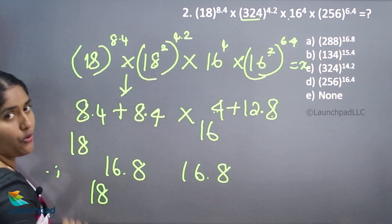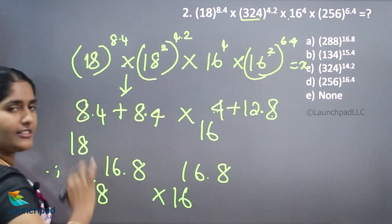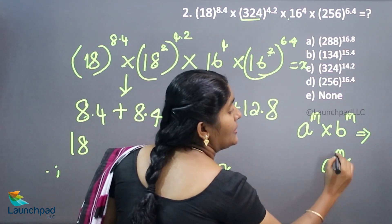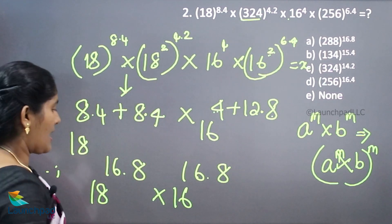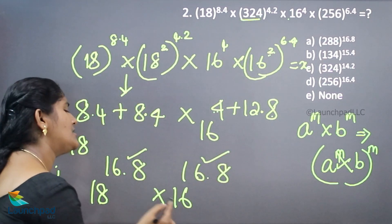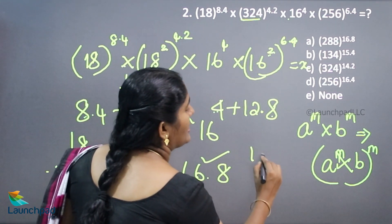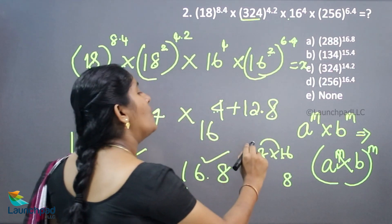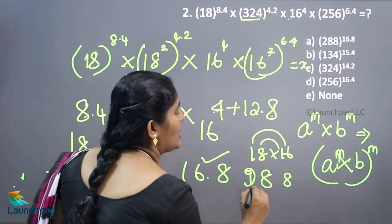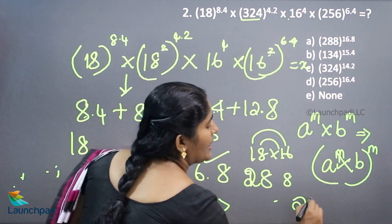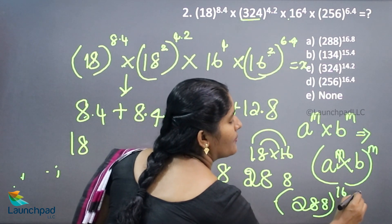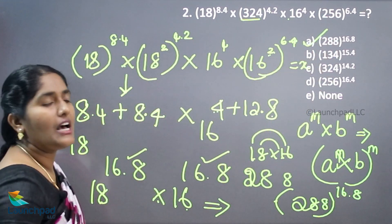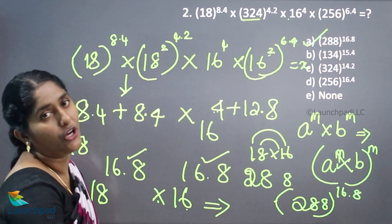So 18 to the power of 16.8 into 16 to the power of 16.8. The law is A to the power of M into B to the power of M equals A into B the whole power M. The power values are the same, so we multiply the base values: 18 into 16. Calculating: 18 × 16 = 288. So the answer is 288 to the whole power 16.8. Option A is your answer. This is the example of A^M × B^M = (A×B)^M formula — when base values are different but power values are the same, we apply this law.